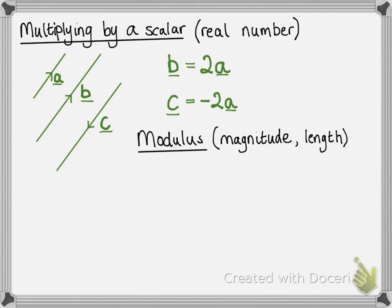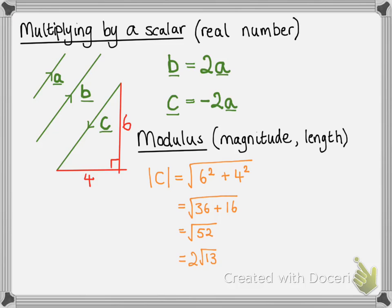You also need to be able to find the modulus of a vector. That means its magnitude or length. We do this with Pythagoras. So say we're looking at that vector C there, and it's got 4 and 6 as its horizontal and vertical lengths. We use Pythagoras—do the square root of 6 squared plus 4 squared to calculate that length of C.